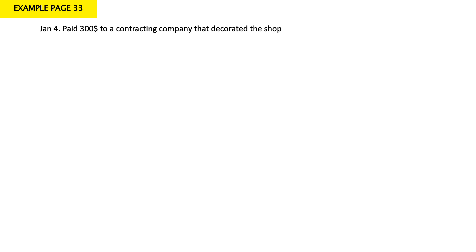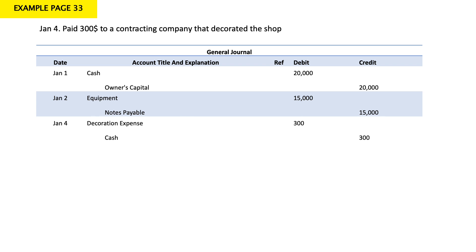On January 4, Emma paid $300 to a contracting company that decorated the shop. My cash decreased and my decoration expense increased. The normal balance of any expense is debit — expenses increase in debit and decrease in credit. Since my decoration expense increased, I debit the decoration expense and credit my cash, because my cash decreased by $300.